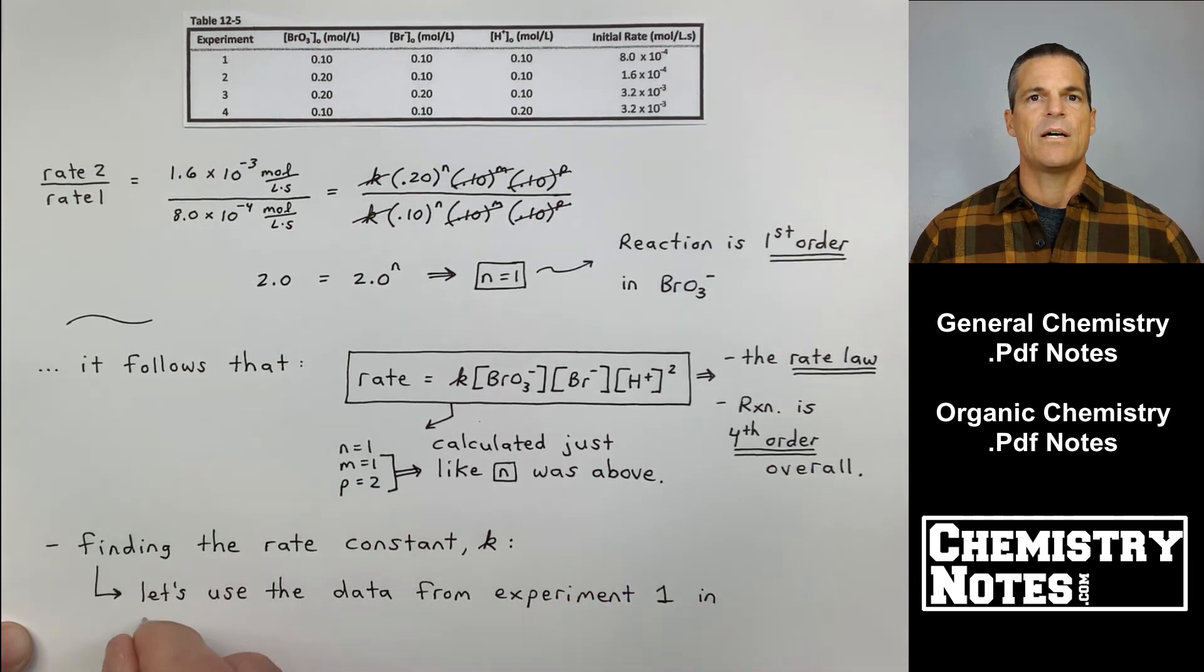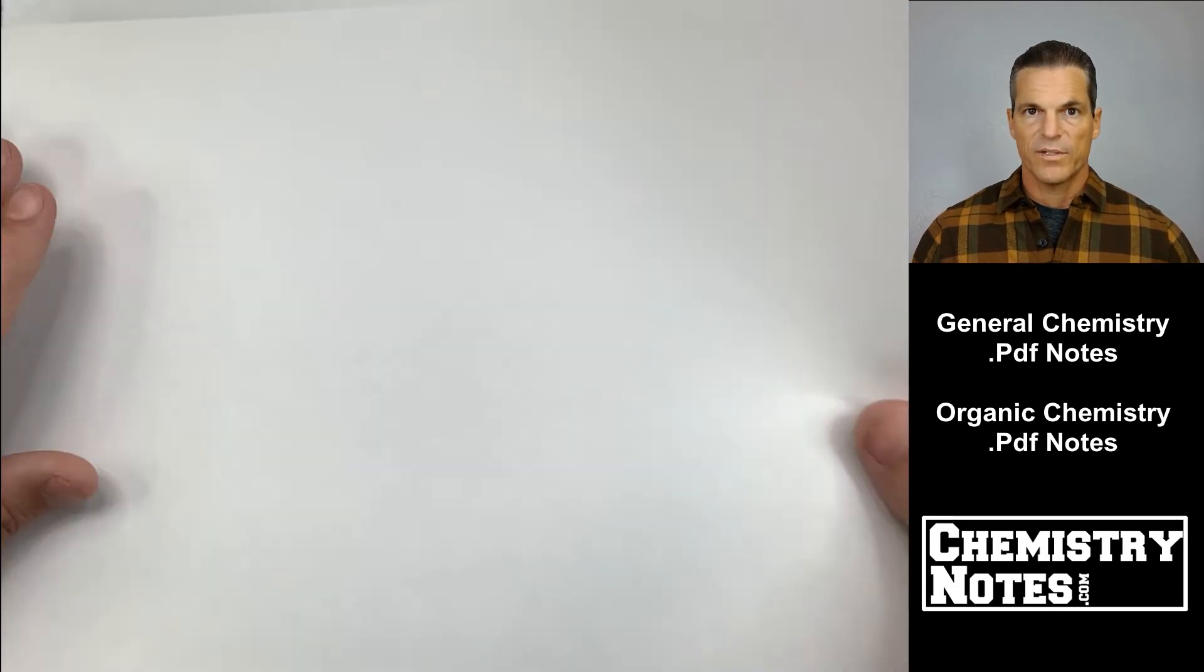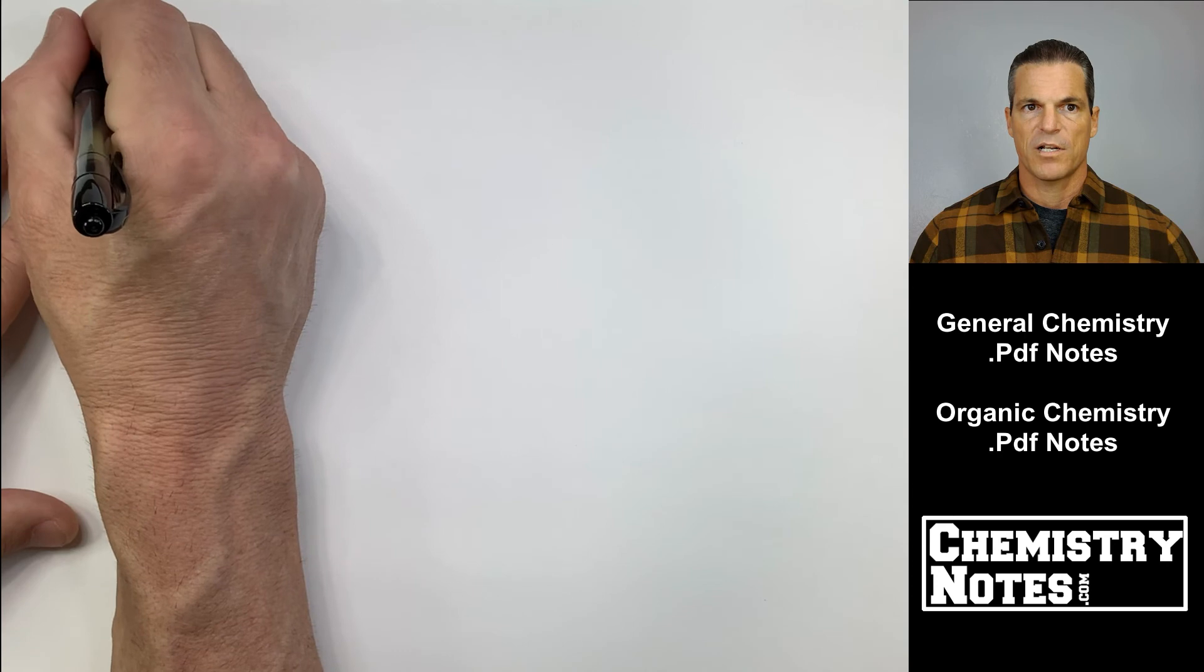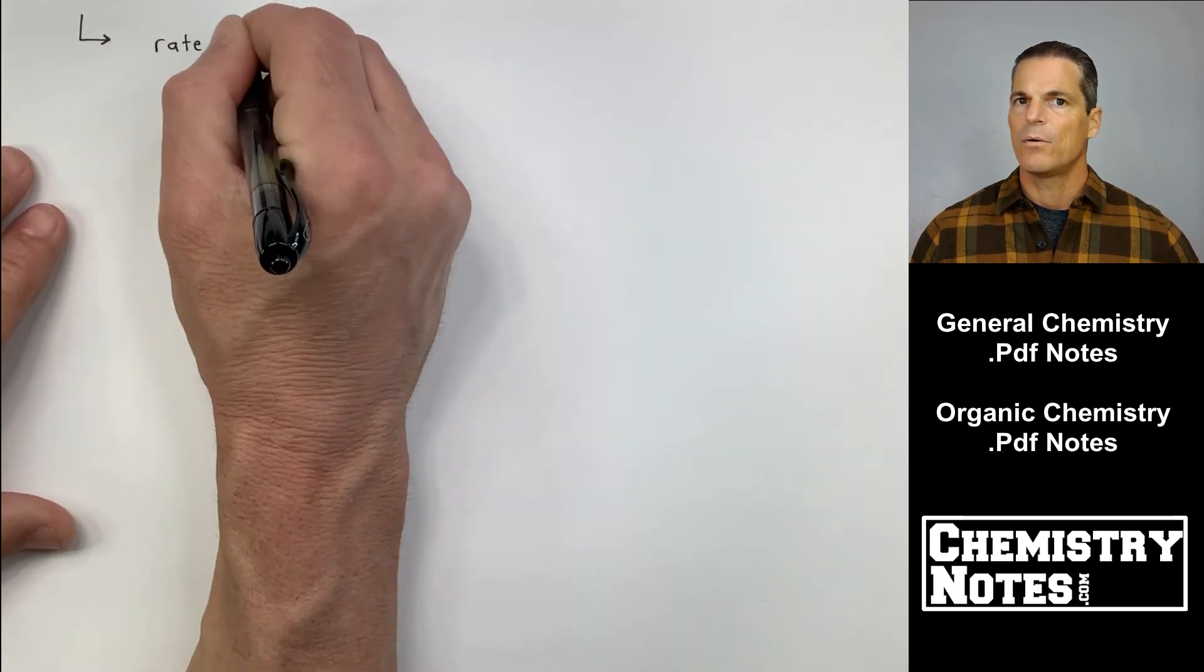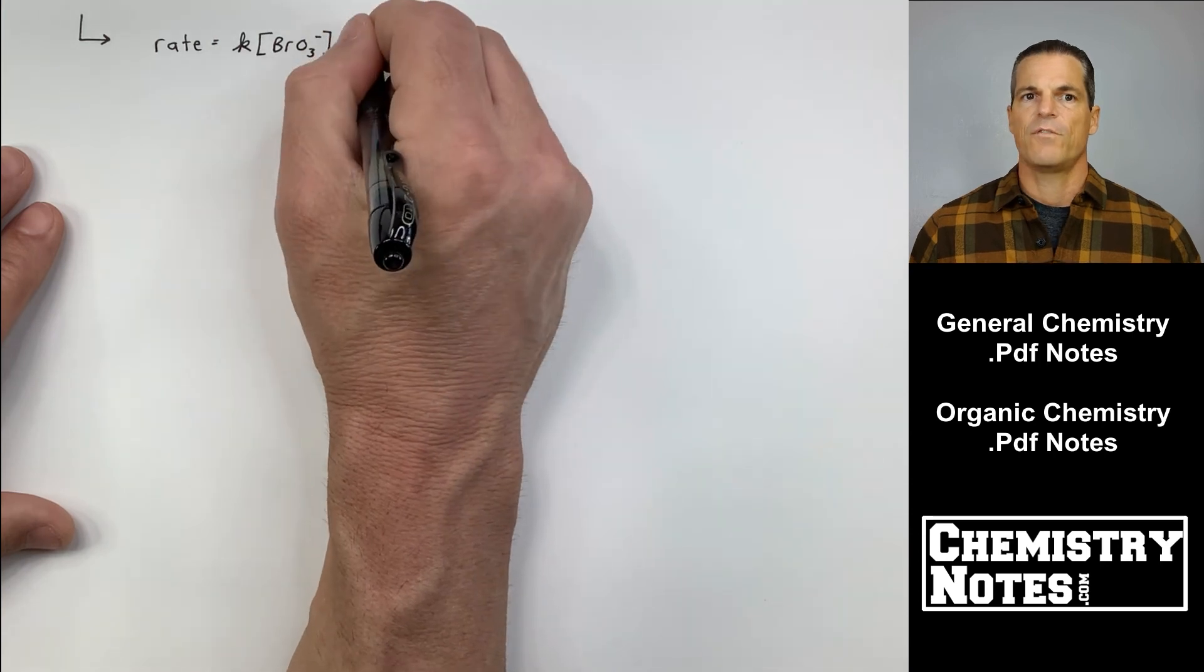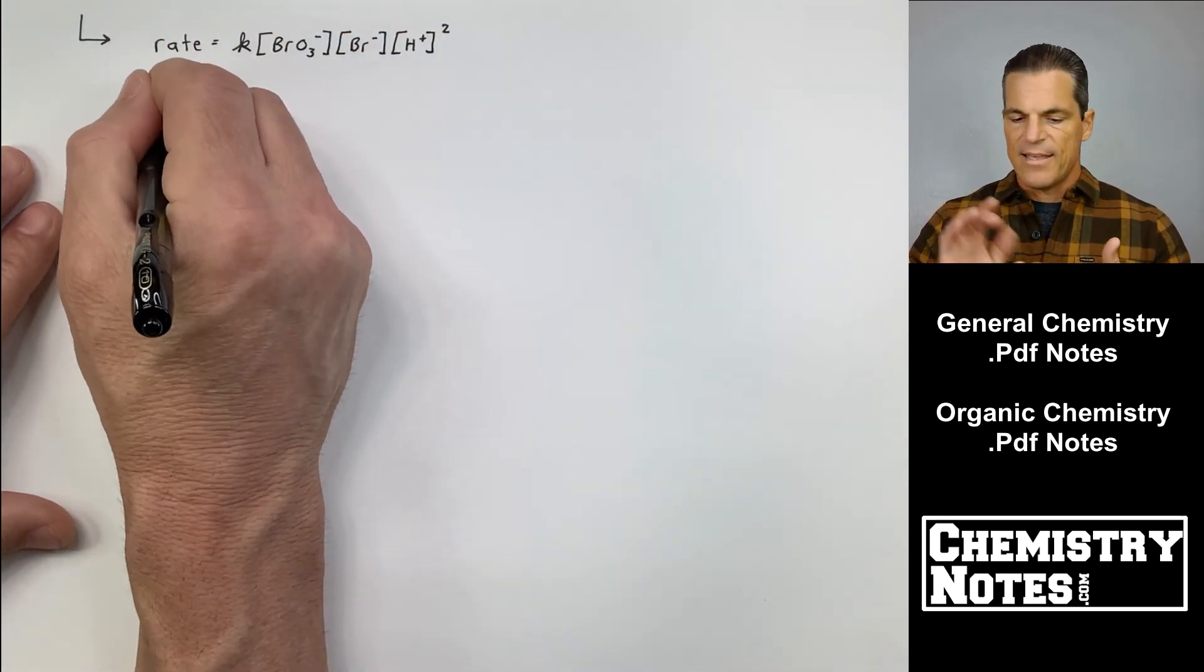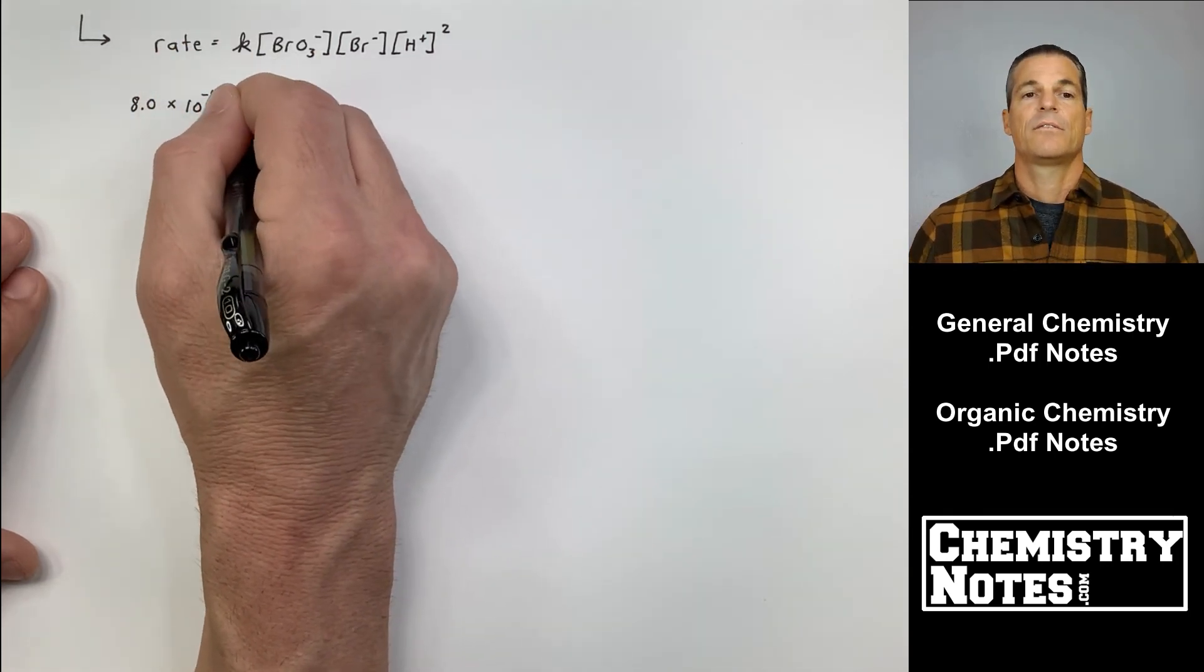I found M, I found N, I found P. We've got all those. Those are always going to be those values for this particular reaction. Now, we're ready to find K. Always find K after you've found the orders of each reactant. I found N, M, and P. Done. Now I can find K.